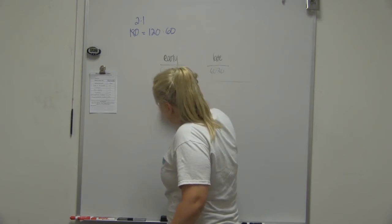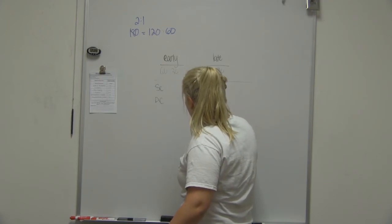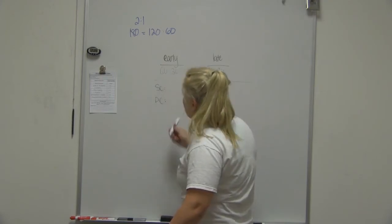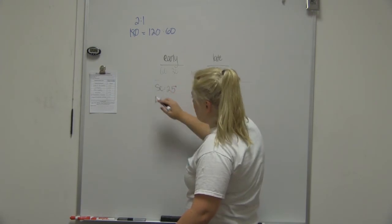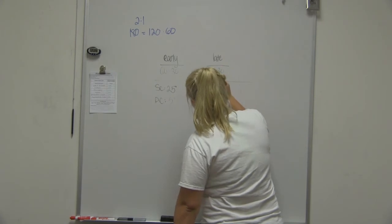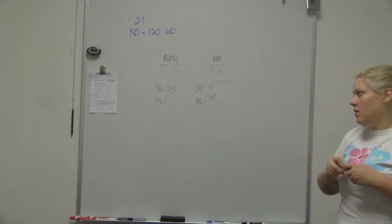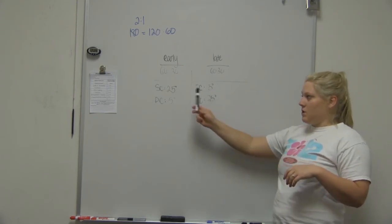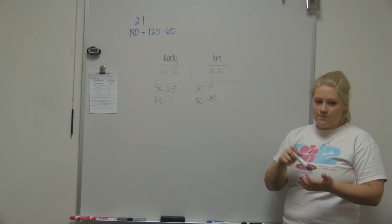Looking at the sternoclavicular and the acromioclavicular joints. So in the early phase, we have 25 degrees movement at the sternoclavicular with 5 at the acromial. And then it switches in the late phase. So really, you just need to know which one's bigger during which phase. So in the early phase, sternoclavicular. Late phase, acromioclavicular.